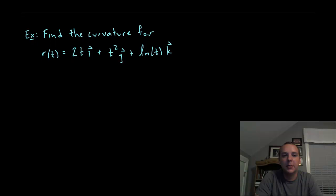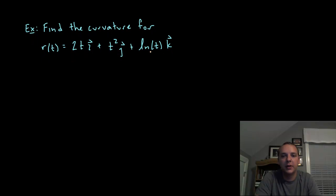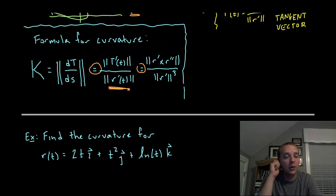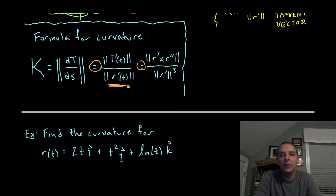Here's an example I want to try. I want to find the curvature for this vector valued function with i, j and k components all depending on time t. As time changes this guy moves around in space. This is a space curve but the concept is still the same. Now I have to decide which of these three formulas might work best.